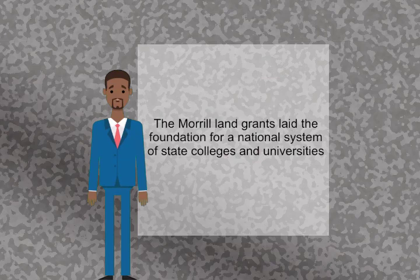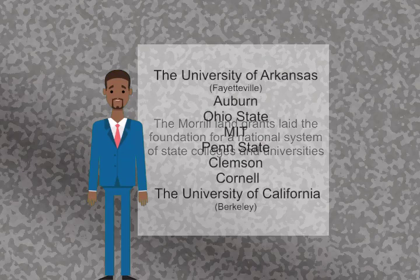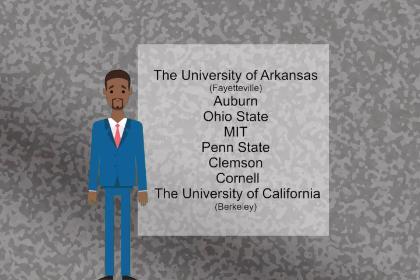In some cases, the land sales financed existing institutions. In others, new schools were chartered by the states. Major universities such as the University of Arkansas, Ohio State, MIT, Penn State, Clemson, Cornell, and the University of California were chartered as land grant schools.